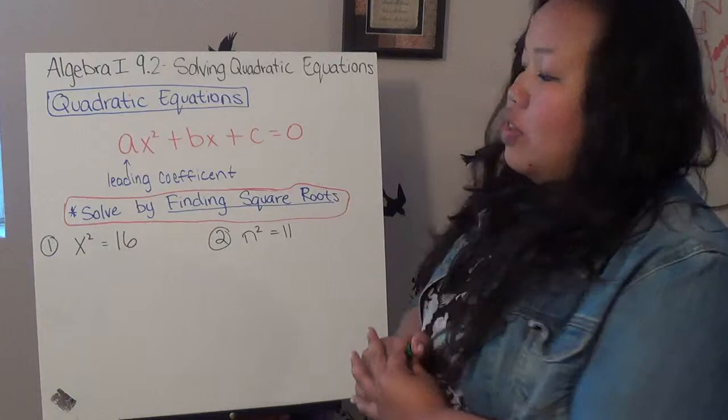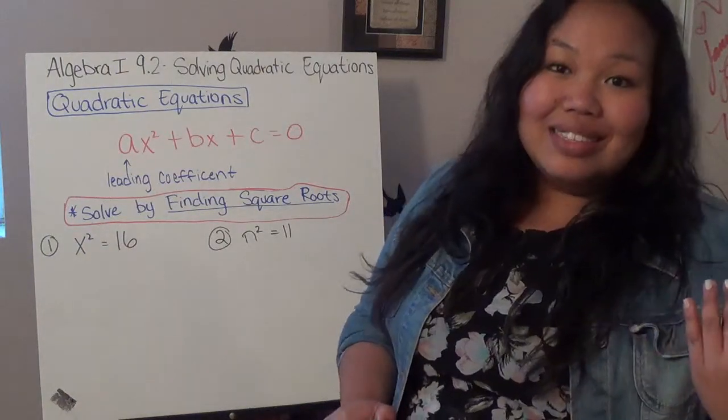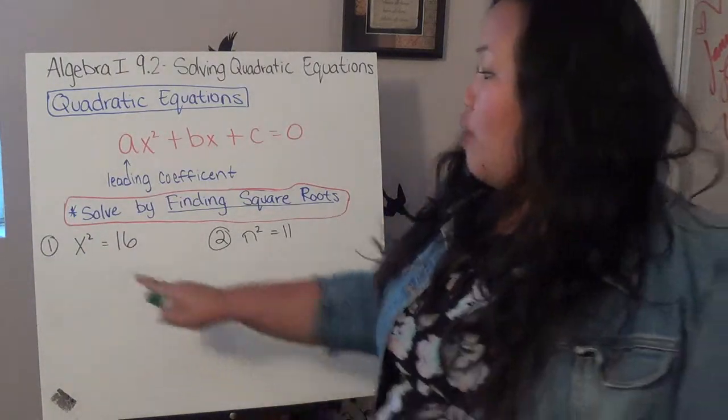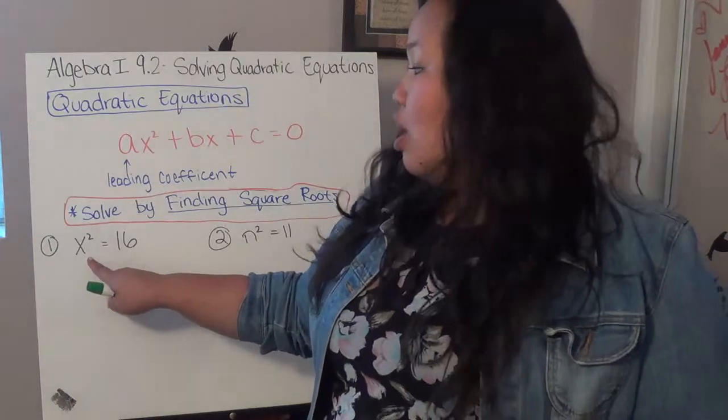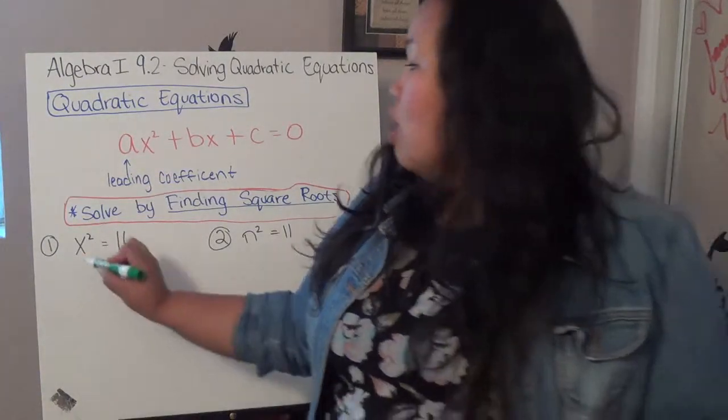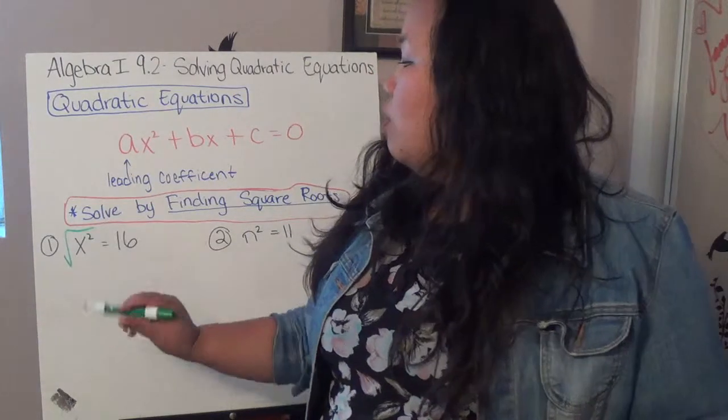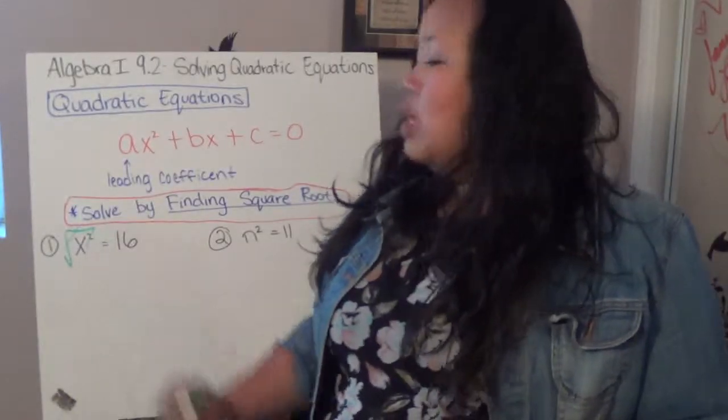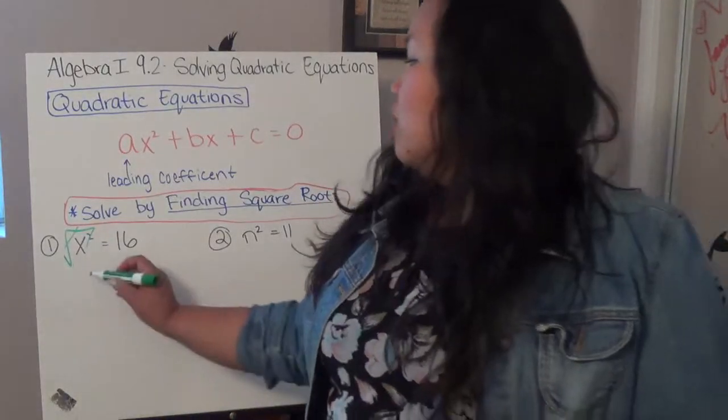For example, the opposite of a square is a square root. So, if I want to get x by itself here, I have to get rid of that square. So, in order for me to get rid of that square, the opposite would be the square root. This and this would then cancel out, leaving me with just x.